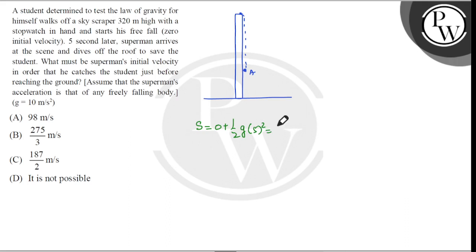That equals to 25 by 2 into g, taking g as 10, which is 8 seconds. So the student will fall in 8 seconds, which means Superman has 3 seconds. Superman has to reach from here to here in 3 seconds.